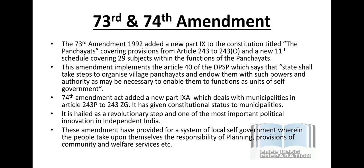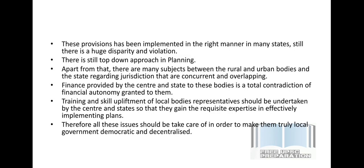These amendments have provided for a system of local self-government wherein the people take upon themselves the responsibility of planning, provision of community and welfare services. Local self-government tries to set up a system where people participate in planning and development. However, this provision has not been implemented in the right manner in many states — there is still huge disparity. Even after around 25 years, it has not been able to work as effectively and efficiently as expected. There is still a top-down approach in planning, where local bodies simply follow their higher level government.